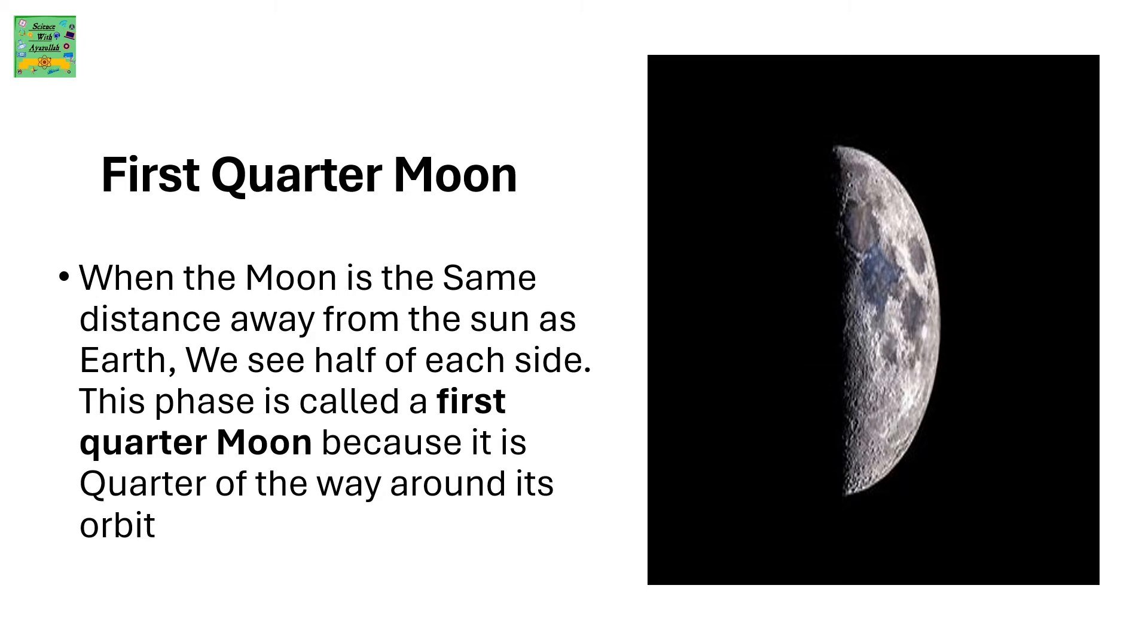First Quarter Moon. When the moon is the same distance from the sun as Earth, we see half of each side. This phase is called a first quarter moon because it is a quarter of the way around its orbit.